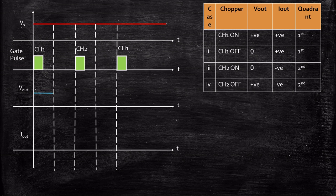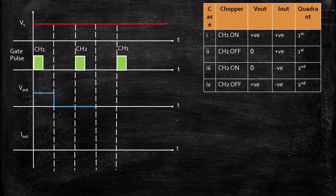For the output voltage waveform: when CH1 is conducting, the output voltage is positive and follows the supply voltage waveform. When CH1 is turned off and CH2 is also off, the output voltage goes to 0. When CH2 is turned on, the output remains at 0. When CH2 turns off, the voltage goes positive again following the source voltage depending on the back EMF generated. For the output current waveform, the inductor was charging through CH1 and the current through the load increases slowly up to the point where CH1 turns off.